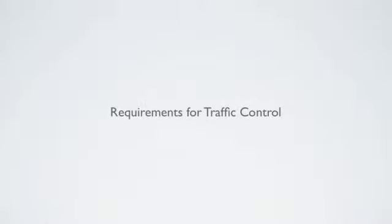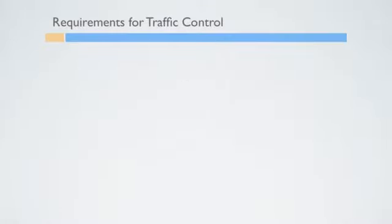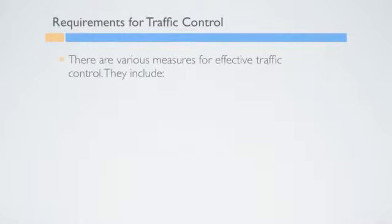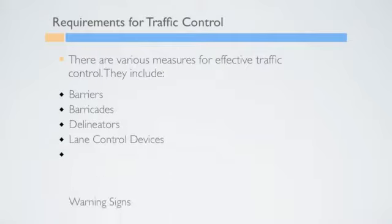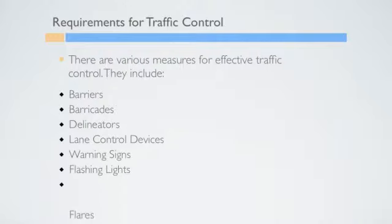The Requirements for Traffic Control. There are various measures for effective traffic control. These include barriers, barricades, delineators, lane control devices, warning signs, flashing lights, and flares.